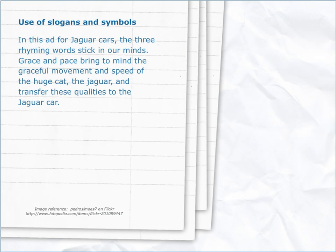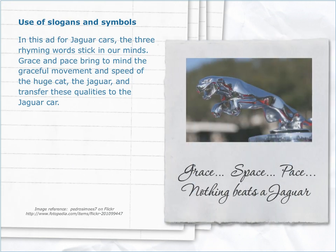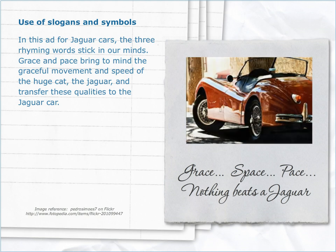Use of slogans and symbols. In this ad for Jaguar cars, the three rhyming words stick in our minds. Grace and pace bring to mind the graceful movement and speed of the huge cat, the Jaguar, and transfer these qualities to the Jaguar car. Grace, space, pace. Nothing beats a Jaguar.